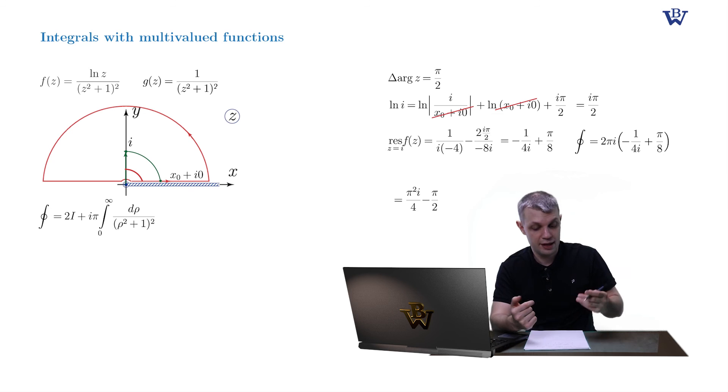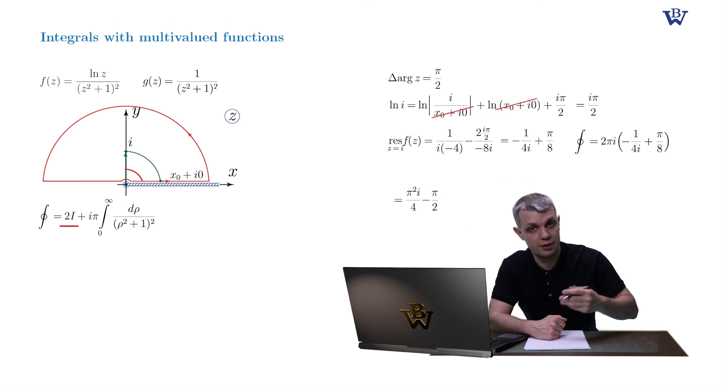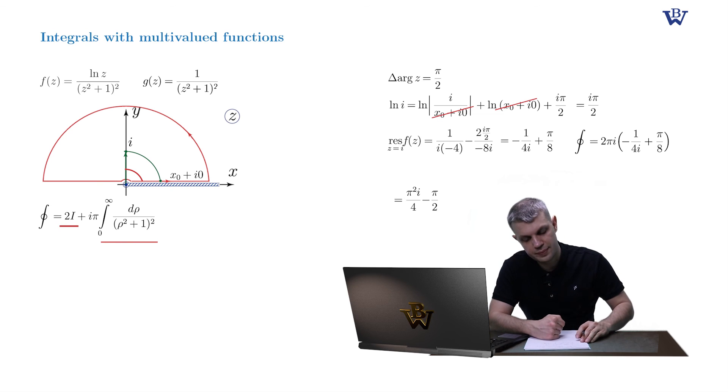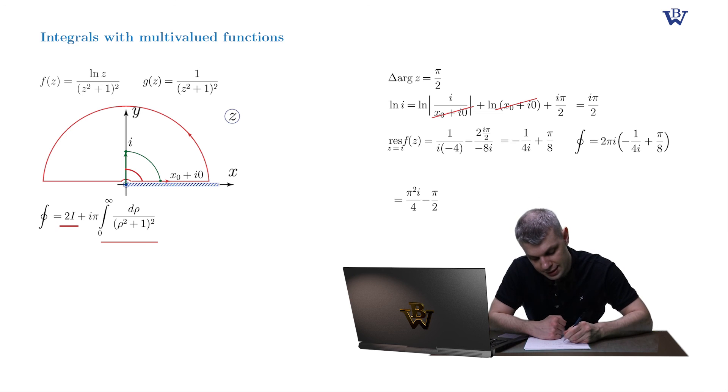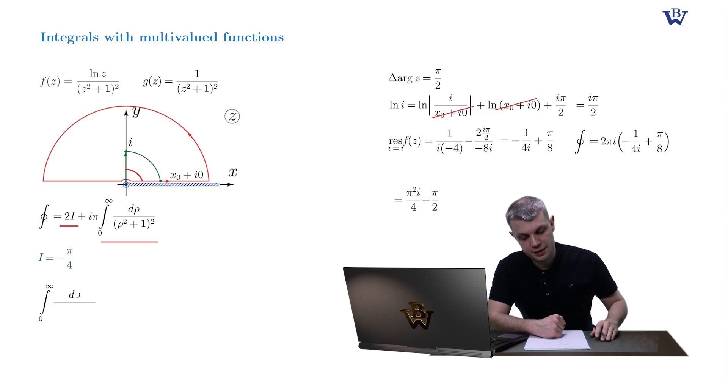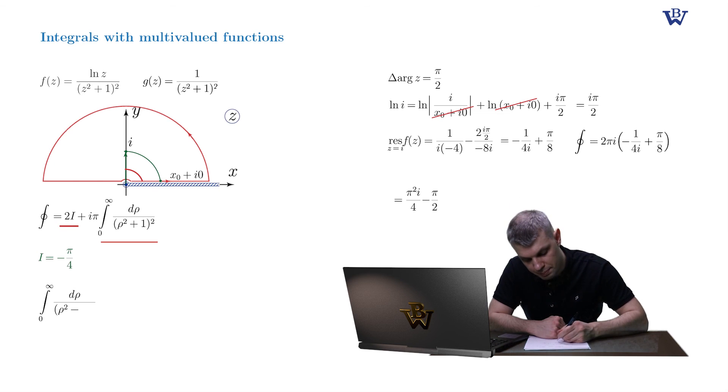And on the other hand, it's equal to 2i, where i is our original integral, plus the remainder term. And finally, we got our original integral. It's simply equal to minus pi by 2, while our remainder integral comes as bonus. And it's equal to pi by 4.